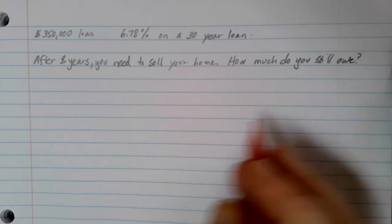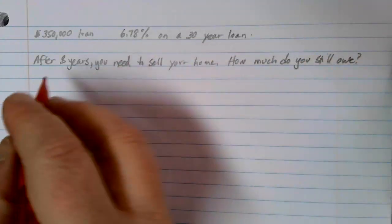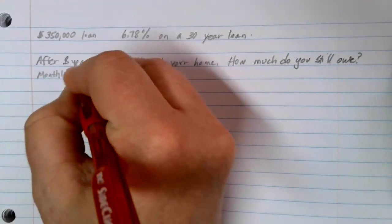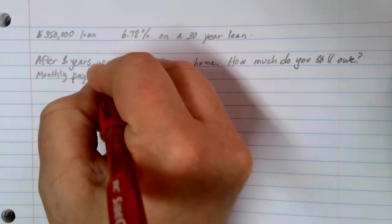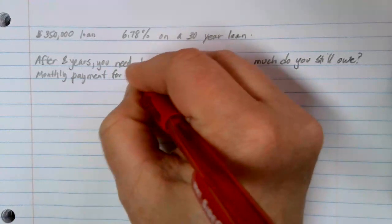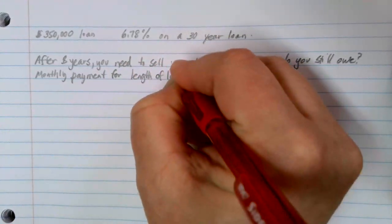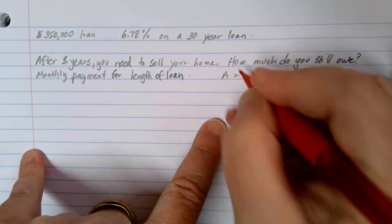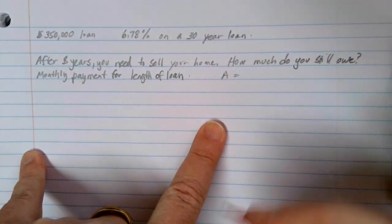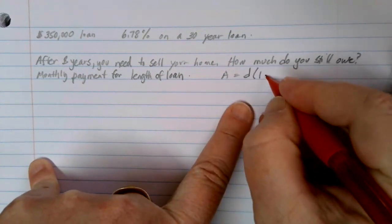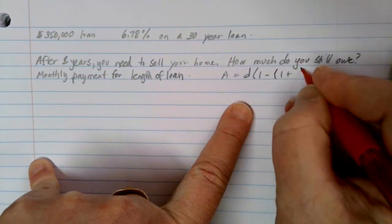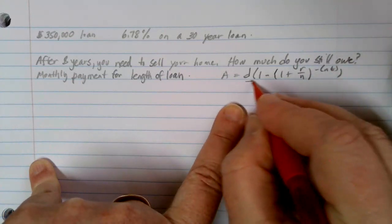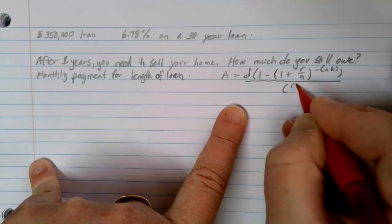The first thing that you're going to need to do in order to calculate these is you need to find the monthly payment for the full length of the loan. And we can do that using our loan formula. And remember, that's A equals D, where D is our monthly payment that we're looking for, times 1 minus 1 plus R over N to the negative NT, all divided by R over N.